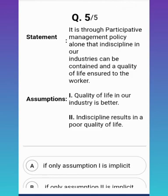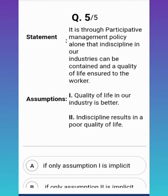The correct answer is none of the assumptions are correct. Assumption one — that quality of life in the industry is better — is actually the opposite of what the statement says. The statement implies quality of life needs to be improved. Assumption two — that indiscipline results in poor quality of life — is also incorrect because indiscipline and poor quality of working are two separate problems to be addressed; one is not necessarily the cause and the other the effect. This is a far-fetched assumption. Restrict yourself to the statement.